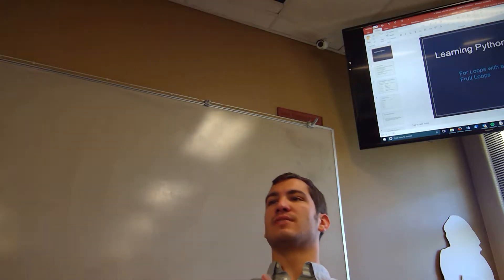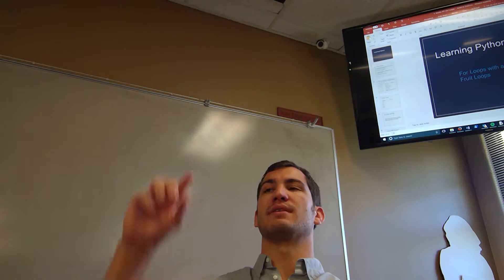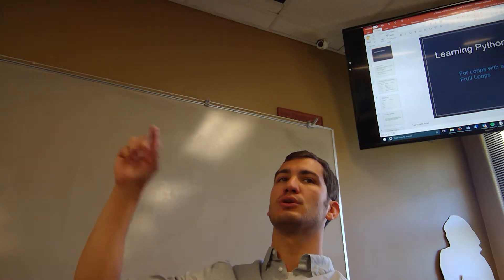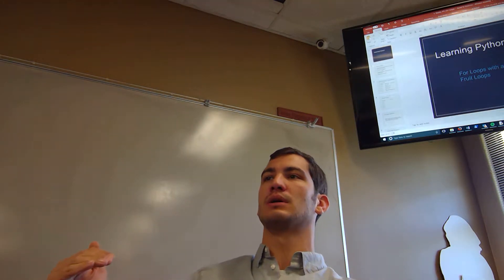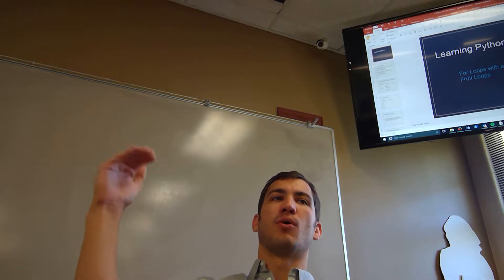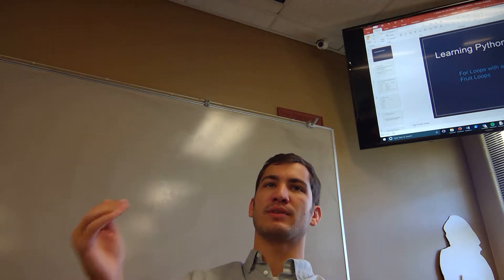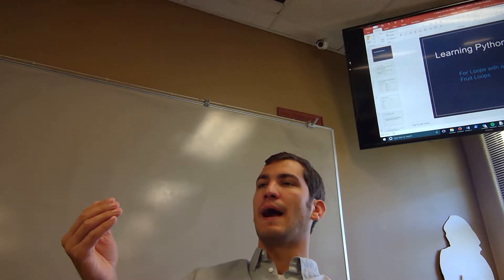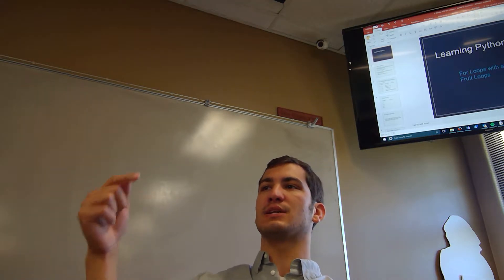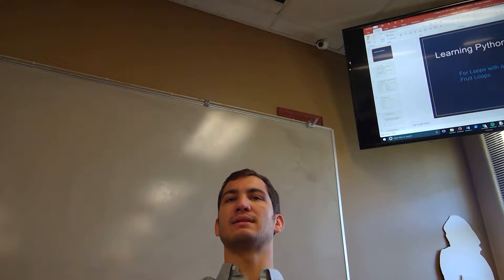So what a for loop does is very similar to an if statement. You have if, and then if it's true, you're going to do this subset of code. What happens when you do a for loop is you have the for, you have the line of code for the for loop, and then everything gets indented, and then everything that's indented gets repeated however many times you code it to.